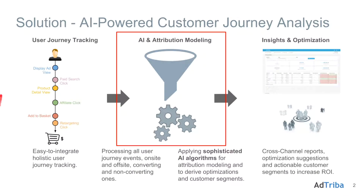For an overview, Attriba consists of three parts. The first part is the holistic user journey tracking where we track all user journeys, meaning converting but also importantly all the non-converting ones. We include display banner ad views and on-site events such as product detail view or add to basket event.